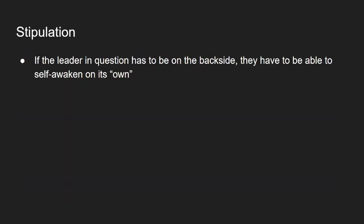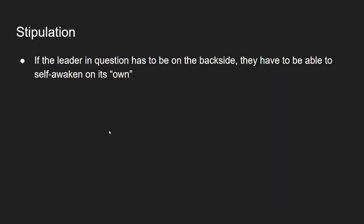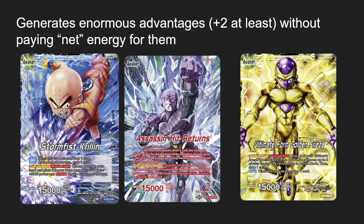However, in order to get these plus two or plus three net advantages, your leader has to be on the back side. The stipulation is: if your leader can't self-awaken and is on the front side for the majority of the game, the advantage generation isn't feasible. Hit is a good example of generating enormous advantage on the back side, but since it can't awaken on its own, you have to exclude it from this criteria — it creates an inherent flaw. So I would exclude Hit from satisfying this particular criteria.